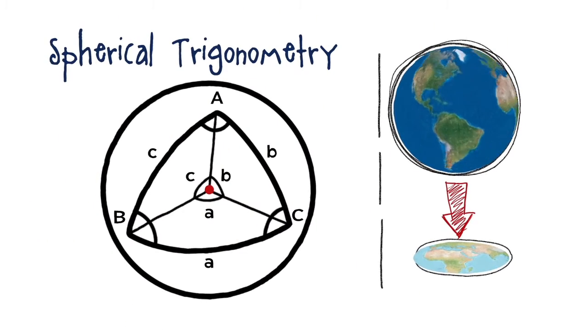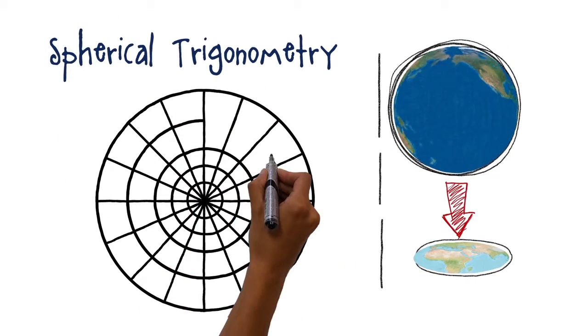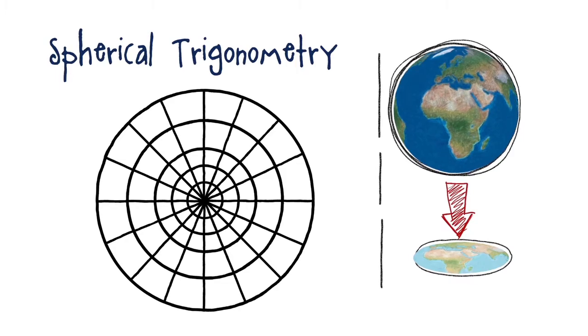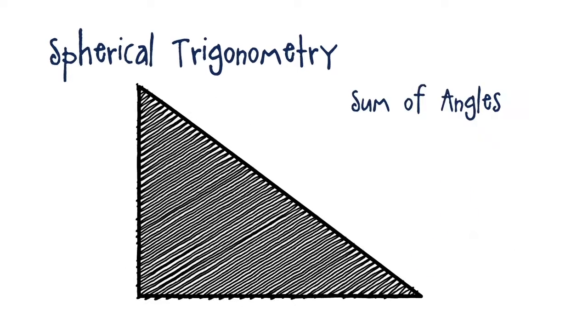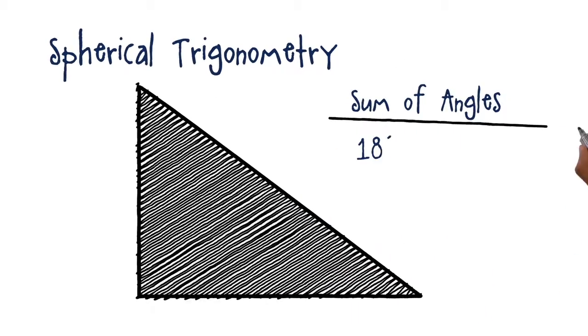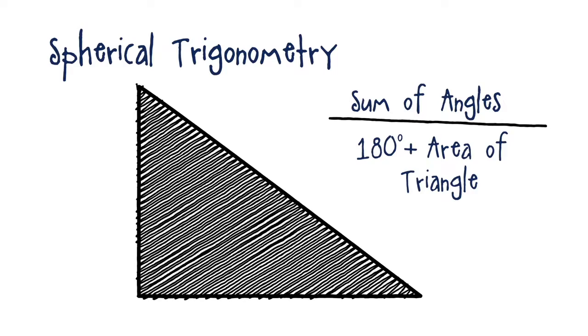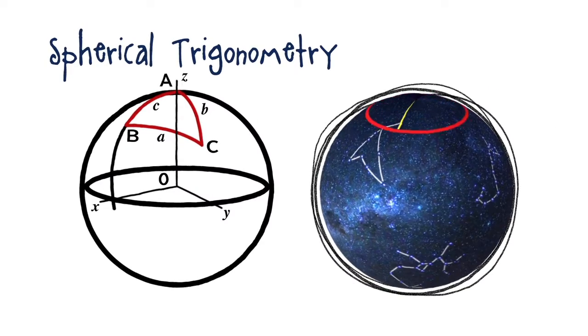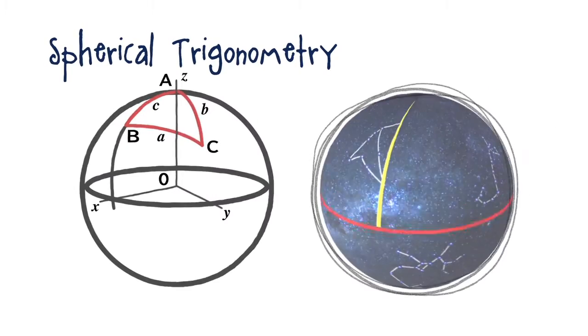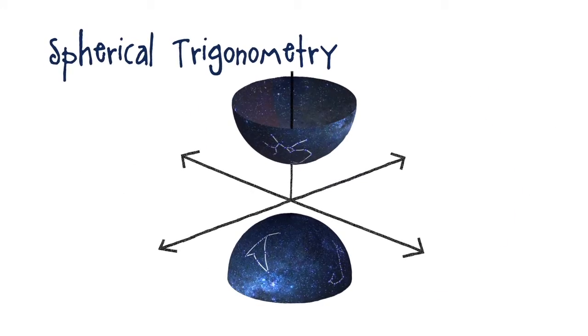Spherical trigonometry deals with curved triangles drawn on the surface of a sphere. This branch of trigonometry, which is used extensively in astronomy and navigation, enables astronomers to project the spherical heavens onto a flat surface for mapping.